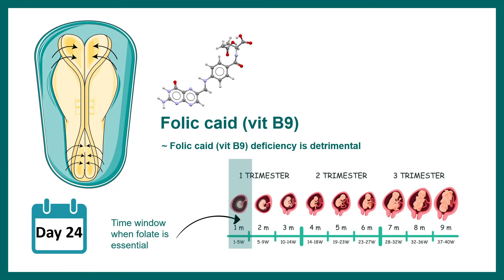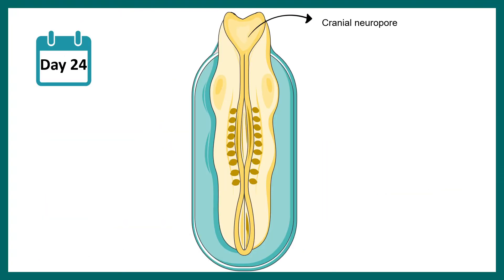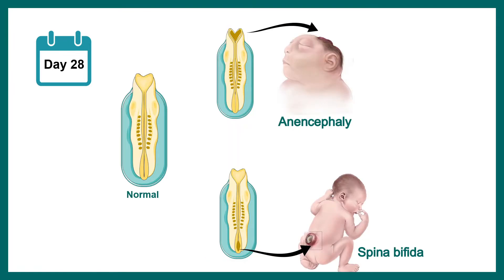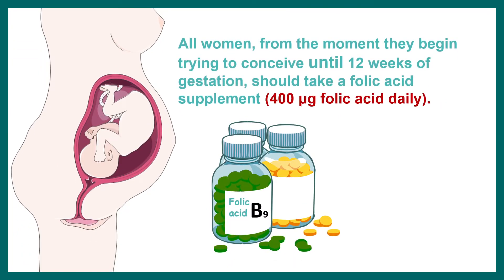Folic acid is required in the first month of pregnancy, sometimes before the woman even knows she is pregnant. Folic acid is really important for neural tube closure. The cranial neuropore closes around day 24 and the caudal neuropore closes around day 28 approximately. If this closure doesn't happen properly, it might lead to problems like anencephaly or spina bifida — both are neural tube defects which lead to severe defects in the nervous system. That is why every woman who wants to conceive should consider taking 400 micrograms of folic acid on a daily basis.